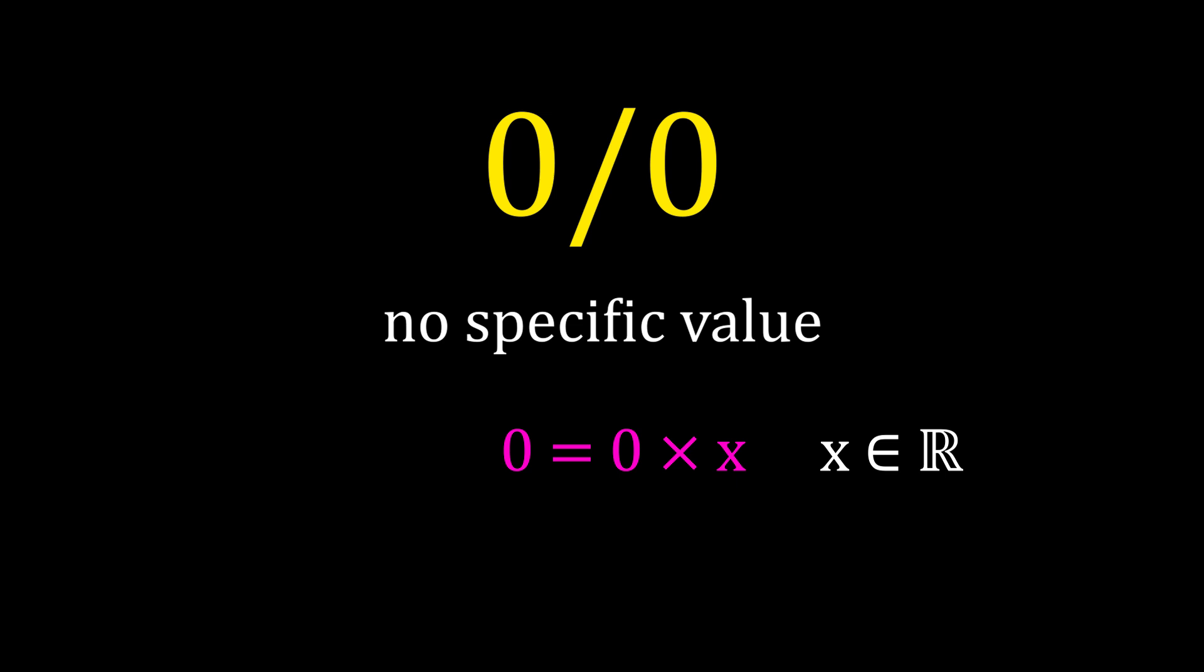Unlike 1 divided by 0, it does exist, but not like any other solution, because it has no specific solution. As there is no specific solution for this, we can't determine the value for this. So we say that 0 divided by 0 is indeterminate.